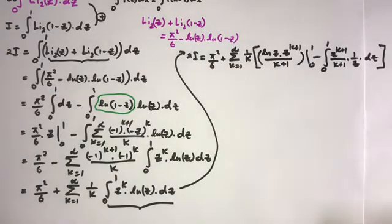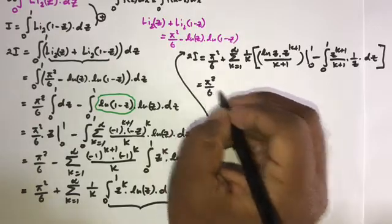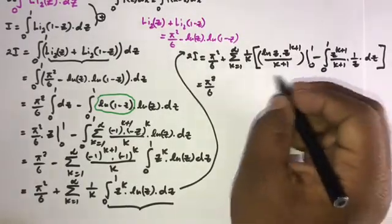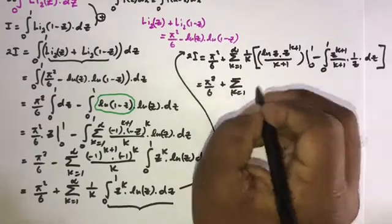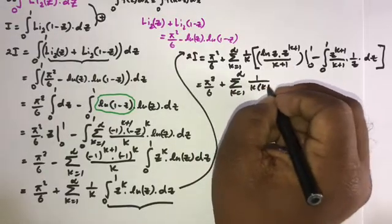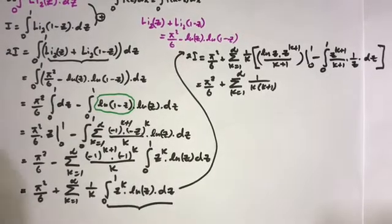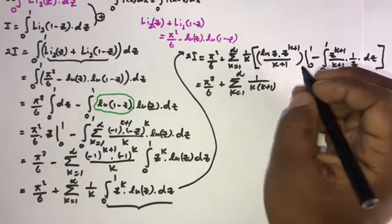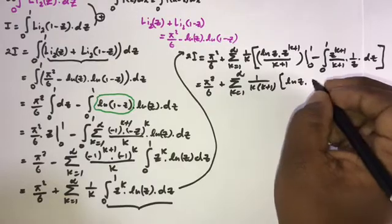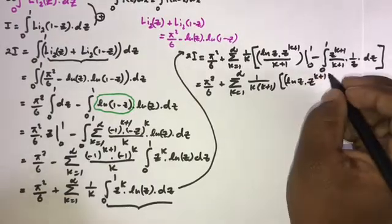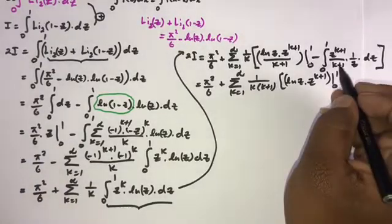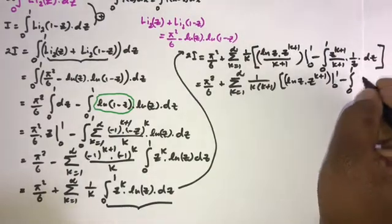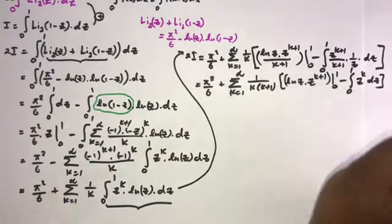This equals π²/6, and taking (k+1) as a common factor, we get the infinite sum from k equals 1 to infinity of 1 over [k(k+1)] times ln(c) times c^(k+1) evaluated, and then c cancels, leaving the integral from 0 to 1 of c^k dc.